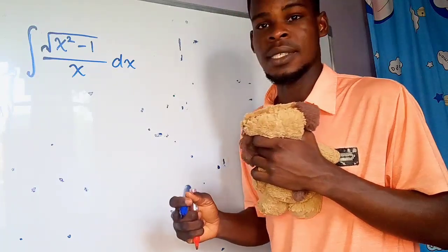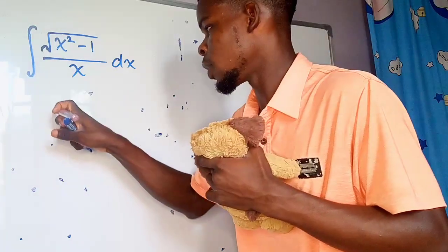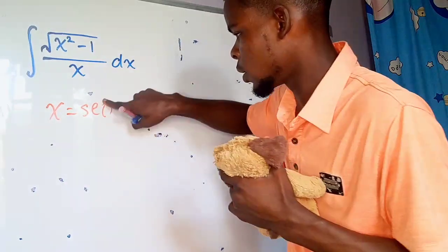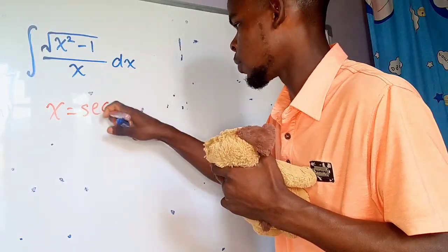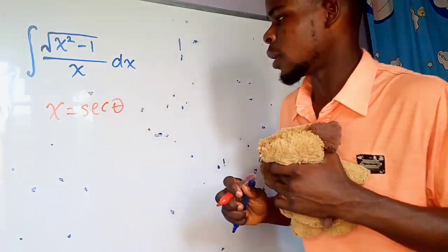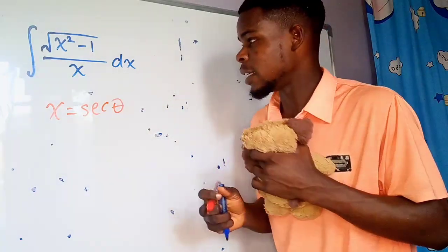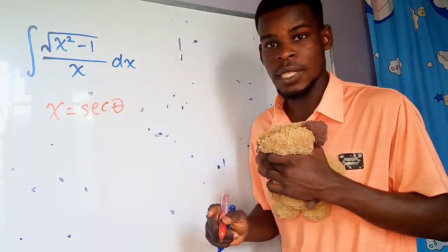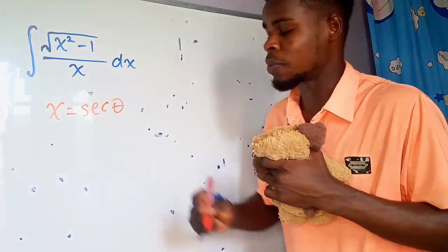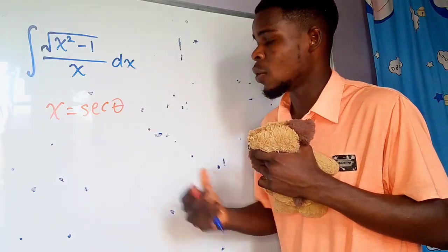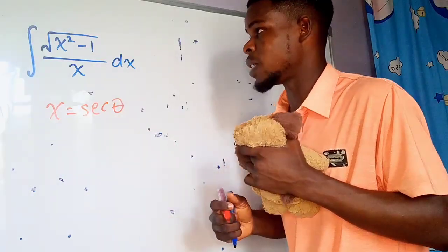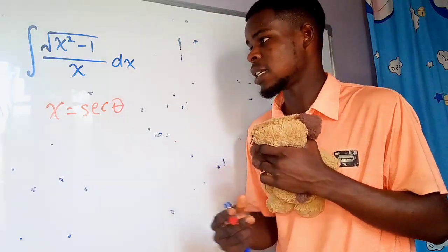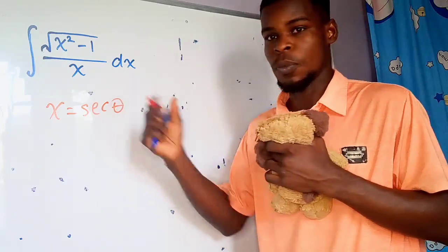I'll say that x should be secant theta. So let x be secant theta. The reason why that is so is because if I have secant in place of x, and I square it and subtract 1 from the square of secant theta, we are going to have a perfect square, which is just tangent squared of theta, which can take care of the square root. So secant is a better option at that point.